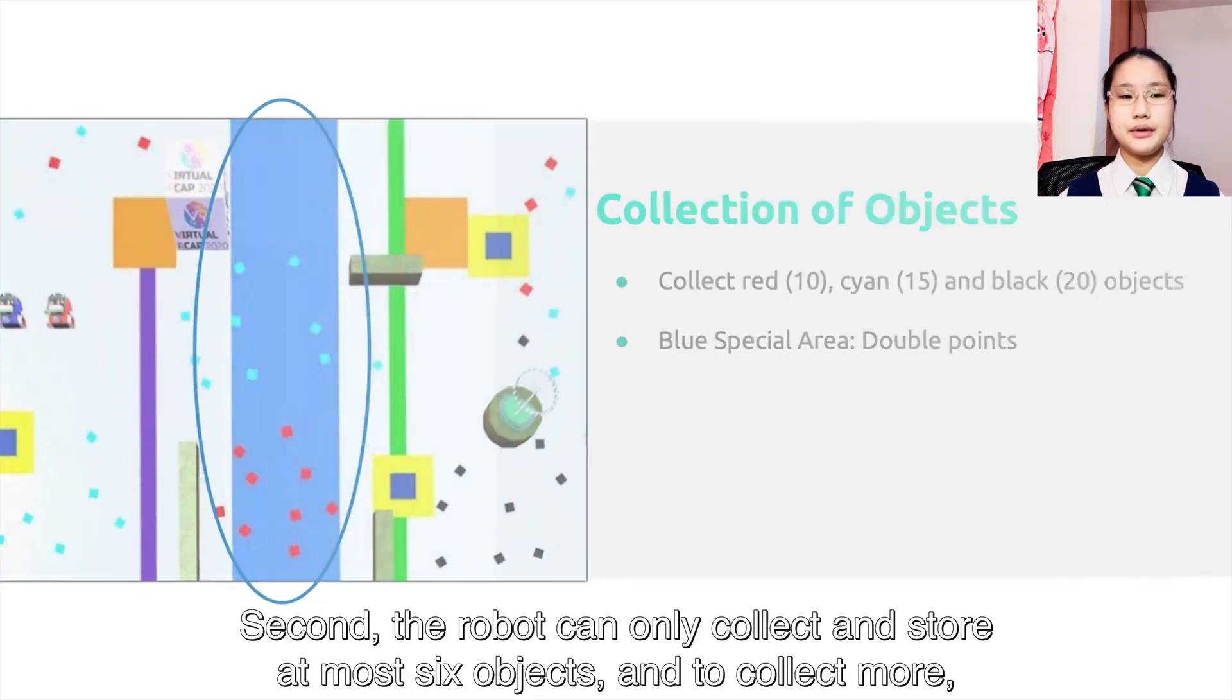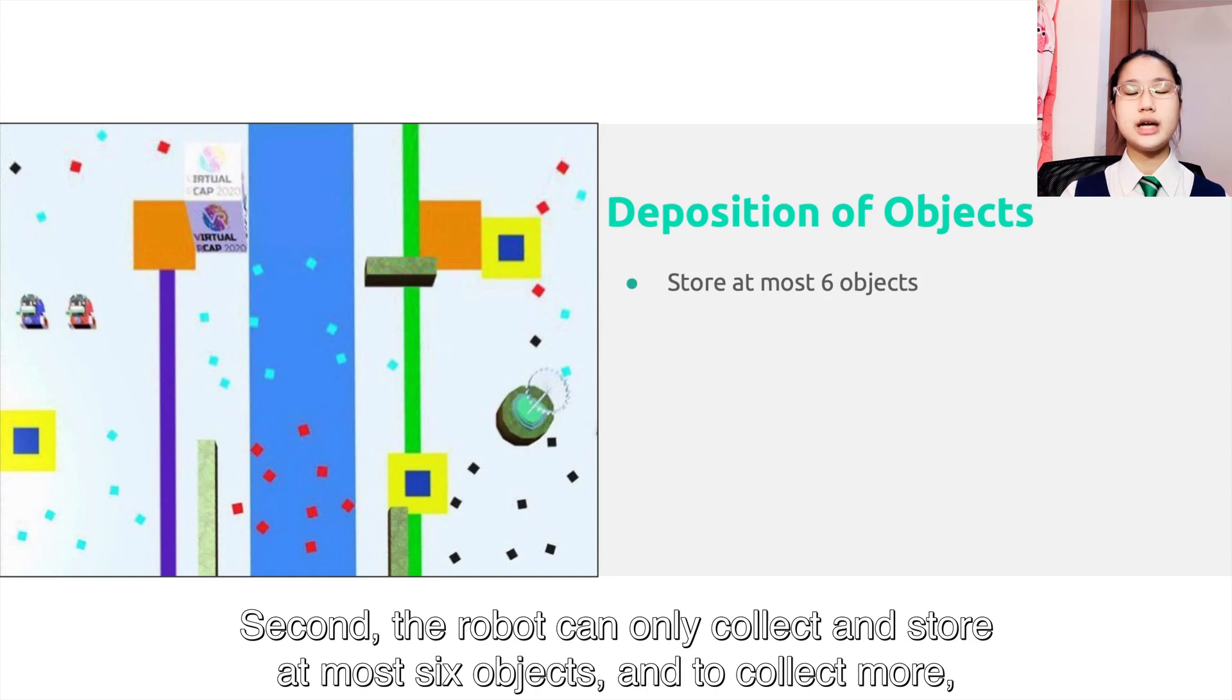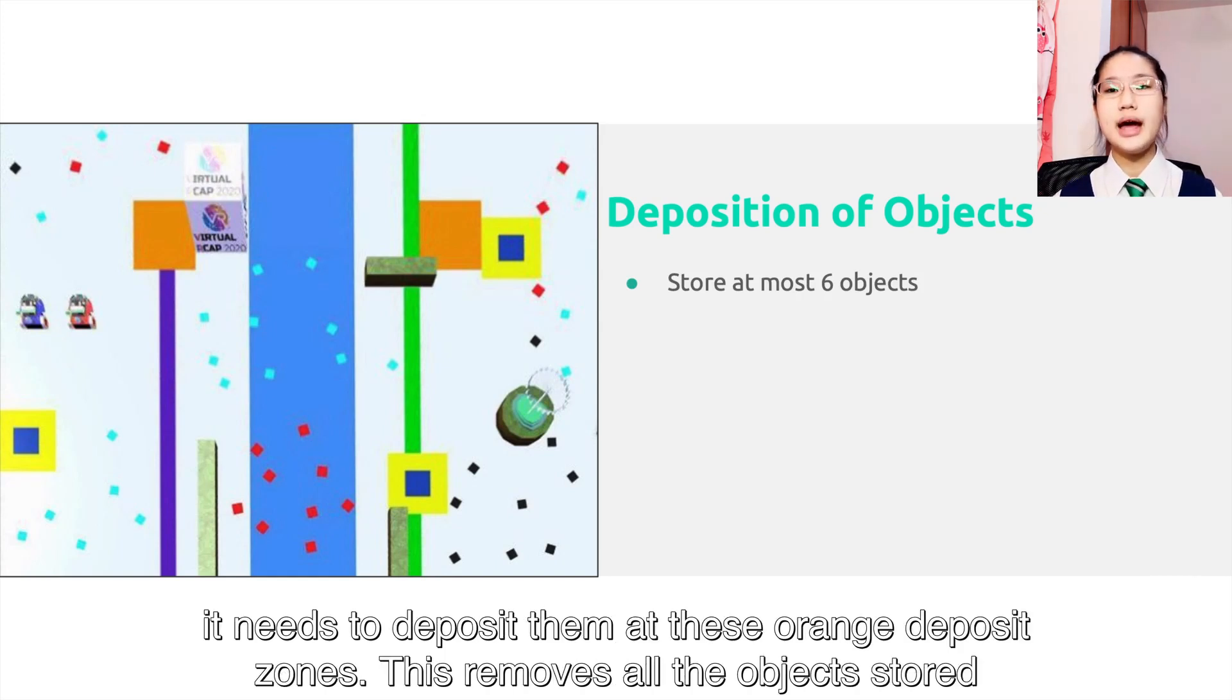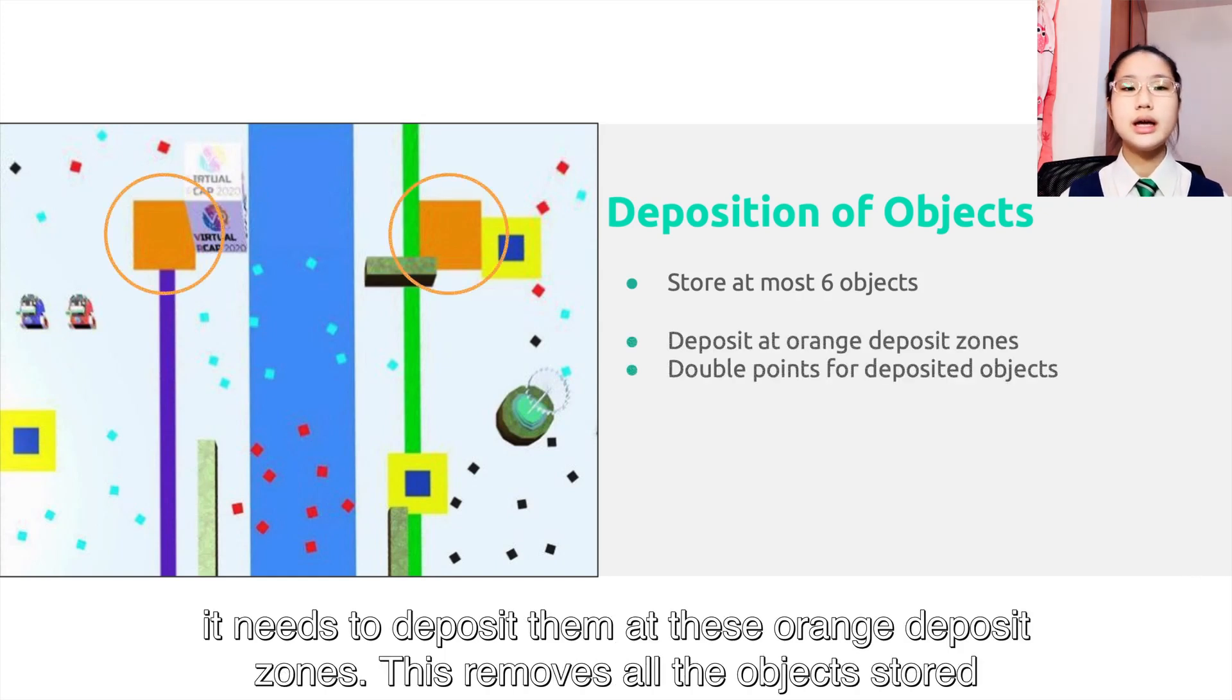Second, the robot can only collect and store at most six objects. To collect more, it needs to deposit them at the orange deposit zones. This removes all the objects stored in the robot, and the points scored for the deposited objects are doubled.